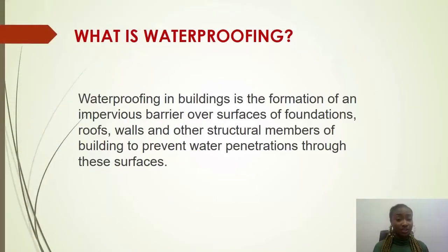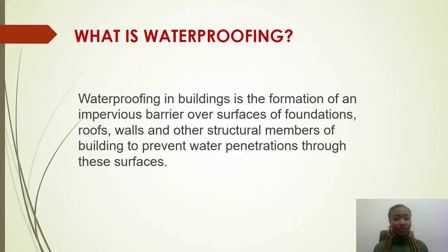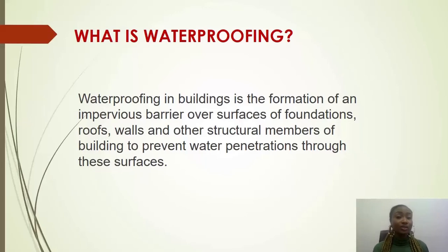What is waterproofing really? Waterproofing in building is the formation of an impervious barrier over surfaces of foundations, roofs, walls, and other structural members of buildings to prevent water penetration. But that definition is more describing waterproofing membrane. Today we are talking about waterproofing admixtures — those chemicals that you add into your concrete during the process of batching and mixing. When you weigh your cement, sand, and other aggregates, you also weigh your waterproofing admixtures, add them, and mix together. This becomes an integral part of your concrete.